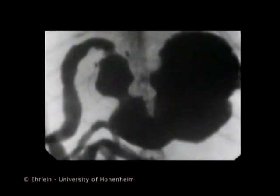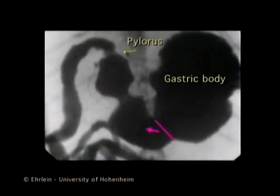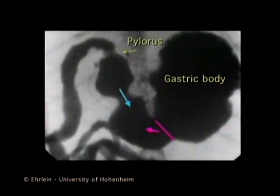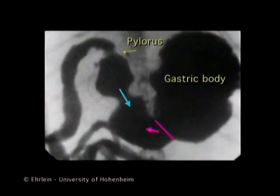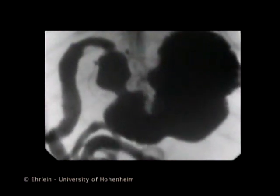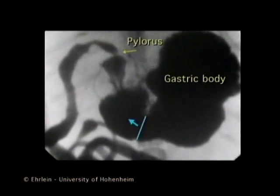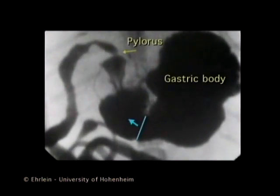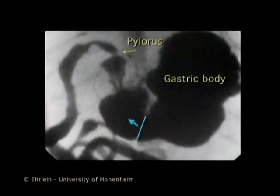The chyme delivered from the gastric body to the antrum accumulates in the proximal antrum together with the retropelled material of the previous antral wave. At the proximal antrum, the constriction of the peristaltic wave becomes deeper. That is the starting point of the antral pump.